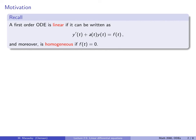Let's recall that a first-order differential equation is linear if it can be written in the following form. Moreover, a linear equation is homogeneous if the term on the right-hand side is equal to zero.